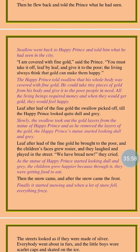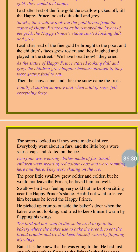Leaf after leaf of the fine gold he brought to the poor, and the children's faces grew rosier and they laughed and played in the street. 'We have bread now!' they cried. Now that the swallow bird had helped all the poor people by giving them the golden leaves, they became very happy and no longer had to face hunger — they could earn bread easily. Then the snow came, and after the snow came the frost. It started snowing and everything froze. The streets looked as if they were made of silver; everybody went about in furs, and the little boys wore scarlet caps and skated on the ice.